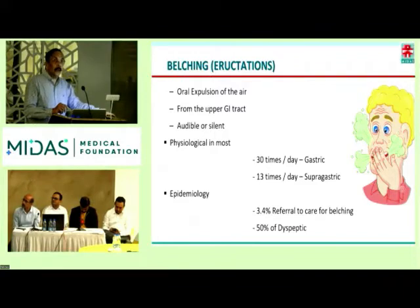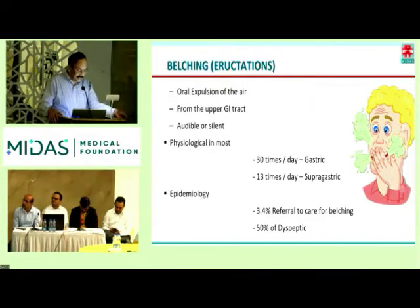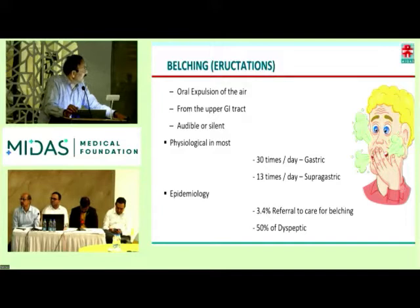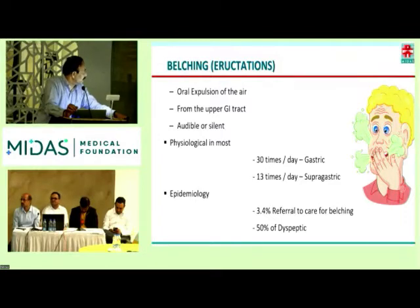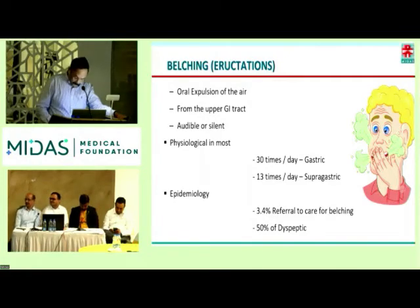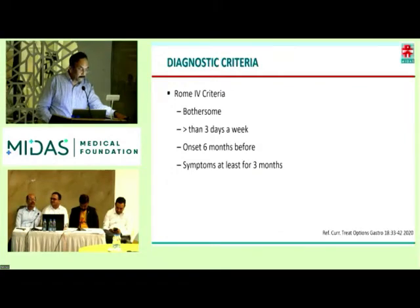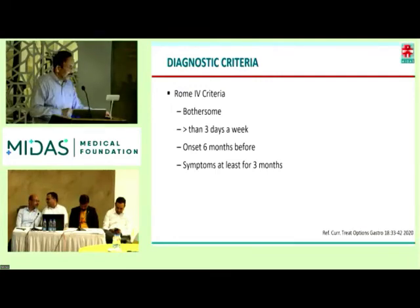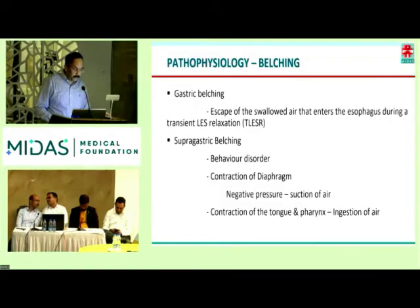Another symptom common in practice is belching. What is belching? It's an oral expulsion of air from the upper GI tract — it can be audible or silent. What is physiological? 30 times in a day is gastric belching, and 13 times per day is supragastric belching. Epidemiology: 3.4% referral, 50% of dyspepsia outpatient symptoms will have belching. The diagnostic criteria according to Rome 4: it should be bothersome, more than 3 times a week, onset 6 months prior, active for a period of 3 months.